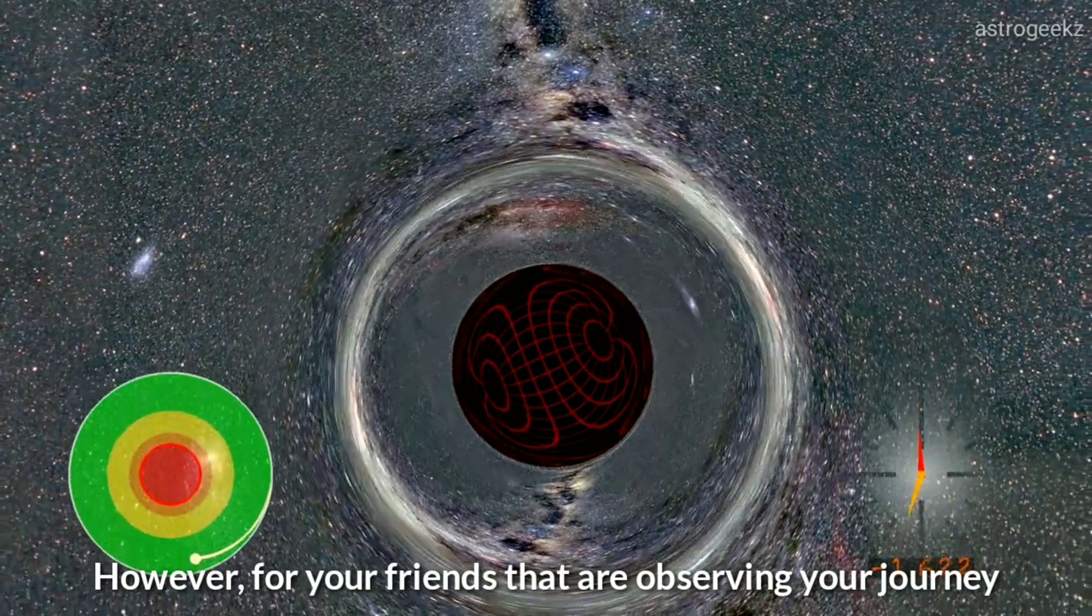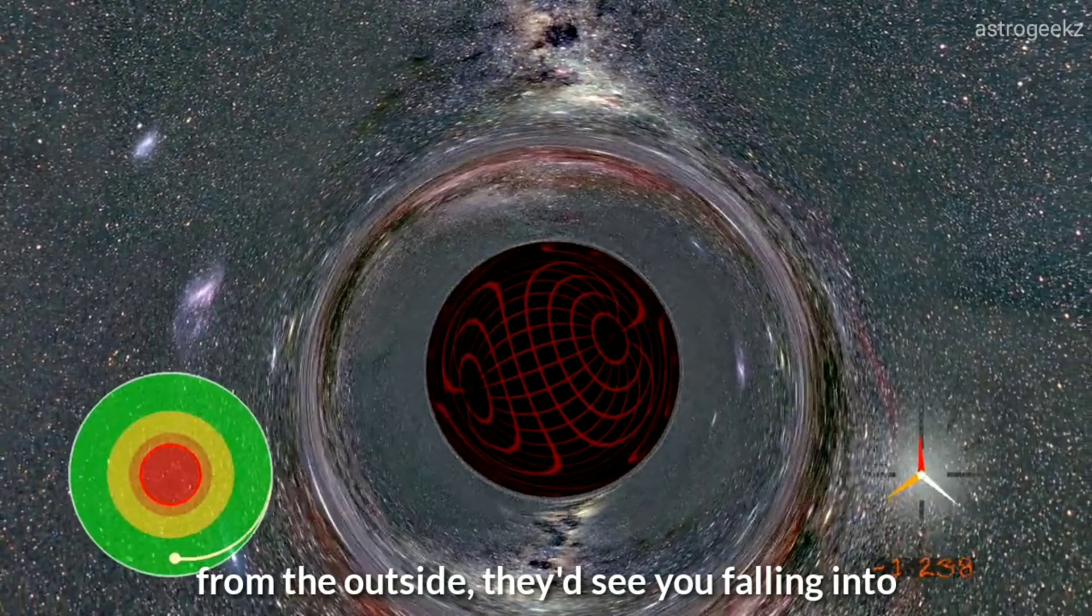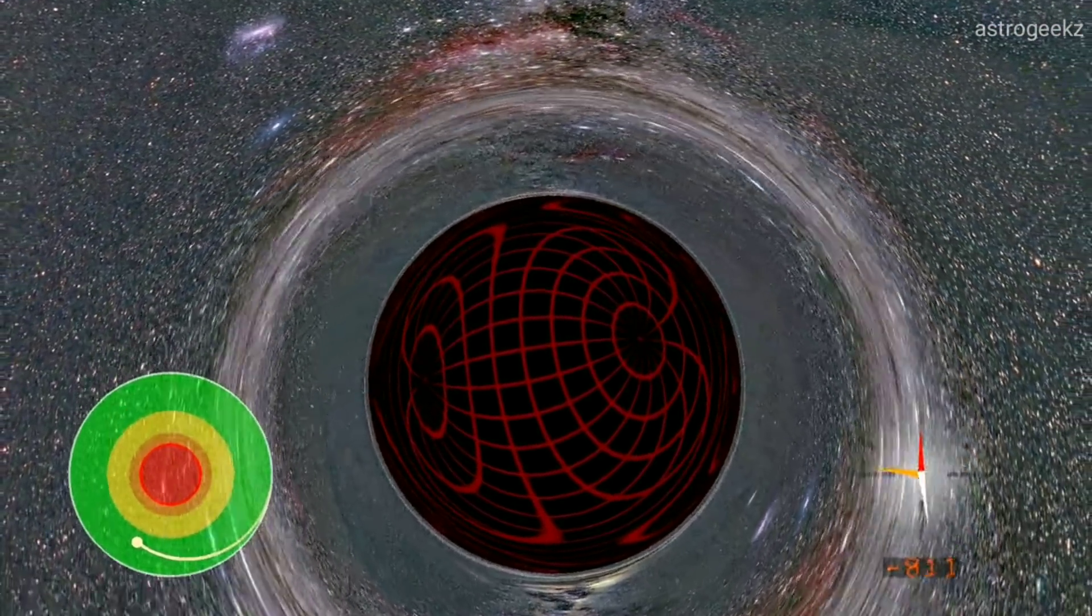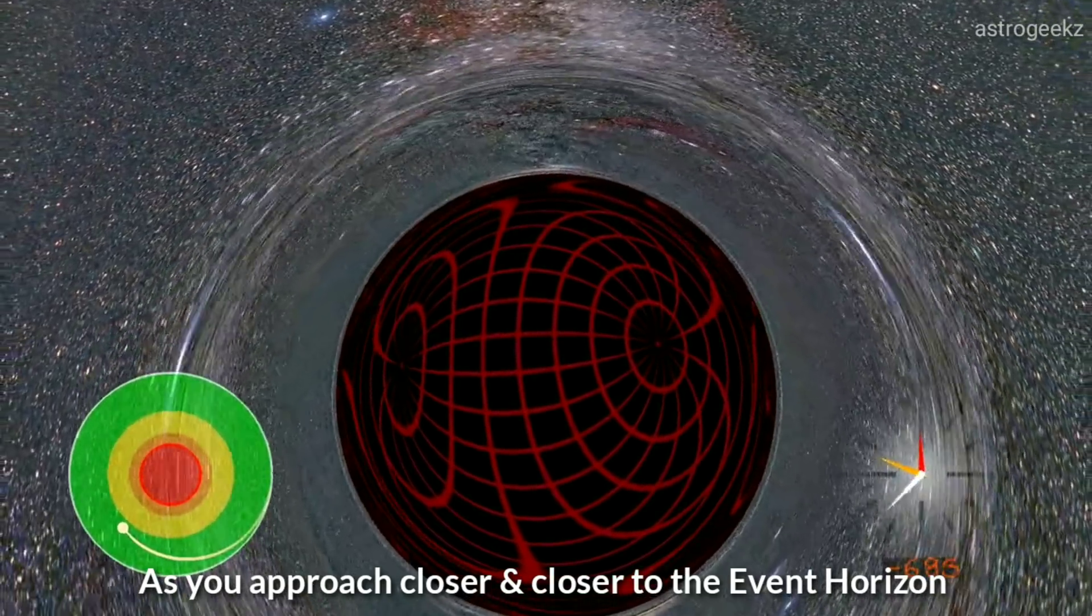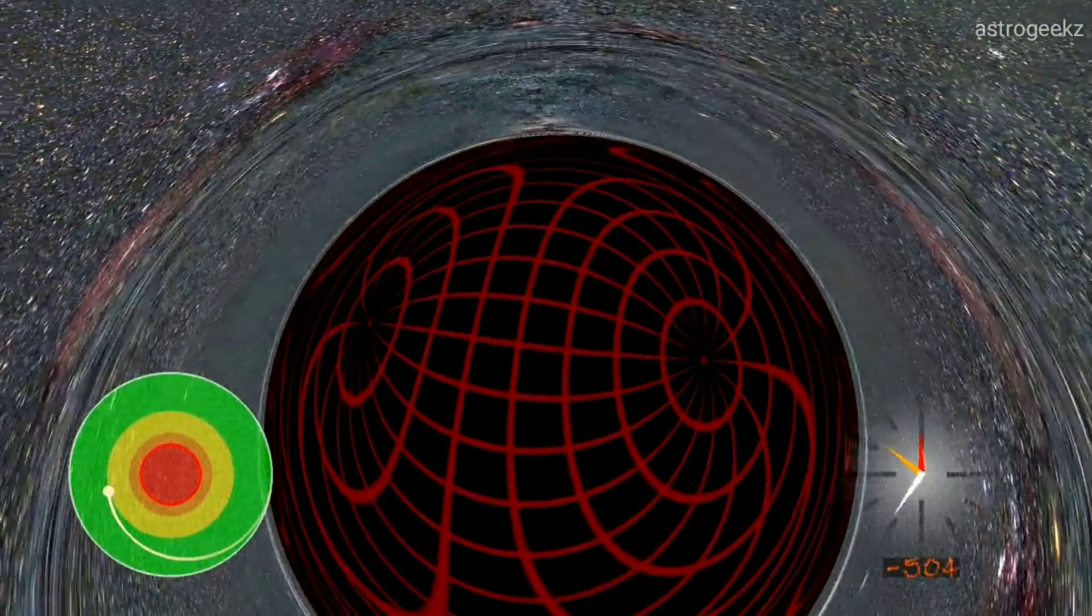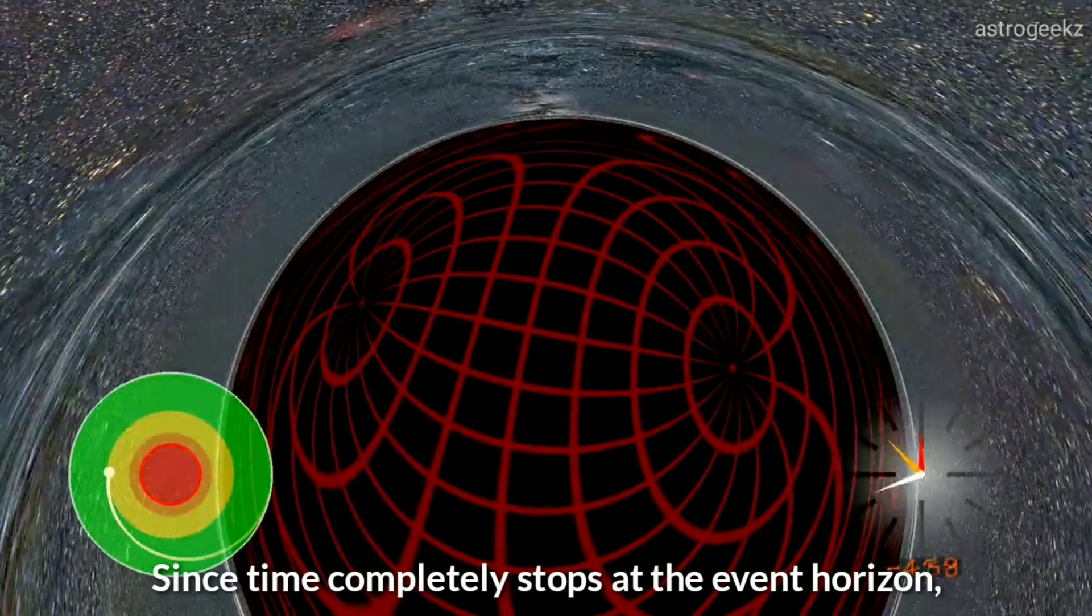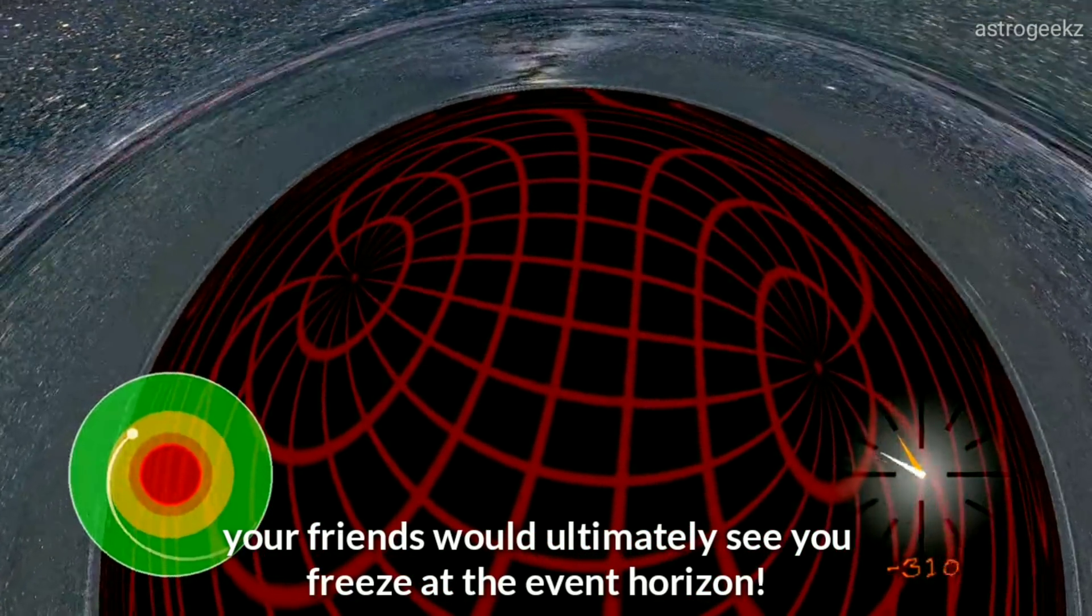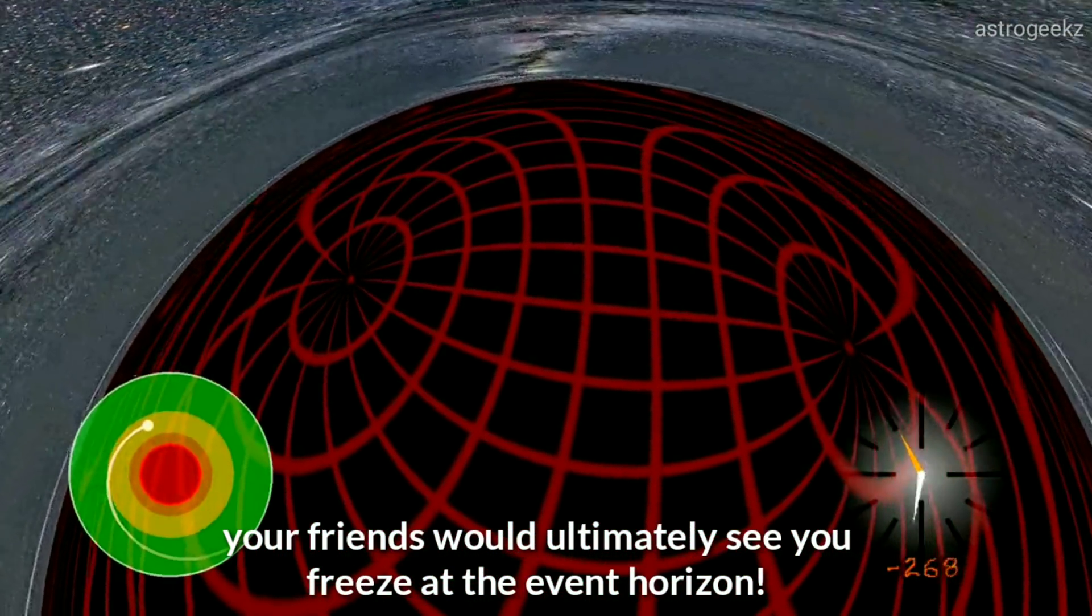However, for your friends that are observing your journey from the outside, they would see you fall into the black hole in slow motion. As you approach closer to the event horizon of the black hole, time would slow down for you. Since time completely stops at the event horizon of the black hole, your friends would ultimately see you freeze at the event horizon.